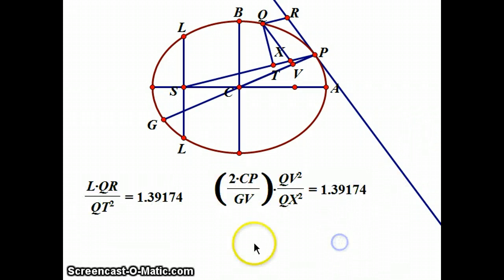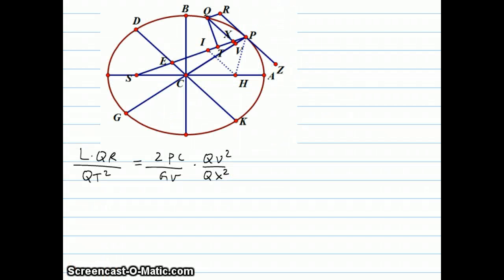He's going to prove this theorem, that L times QR over QT² always equals 2CP over GV times QV² over QX². Once he proves that this is generally true, no matter where P and Q are, he then says that when Q gets really close to P, these things all become ones.